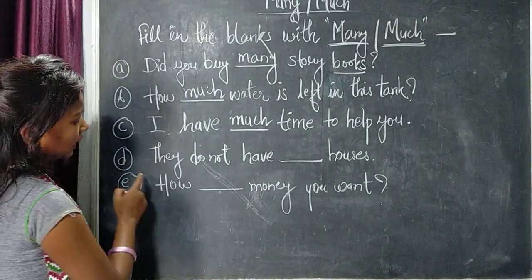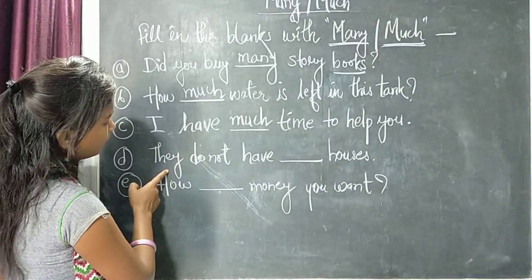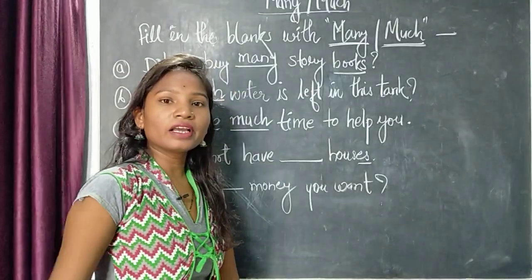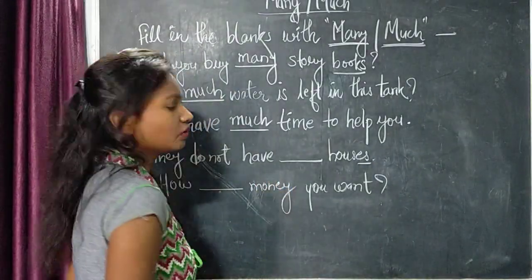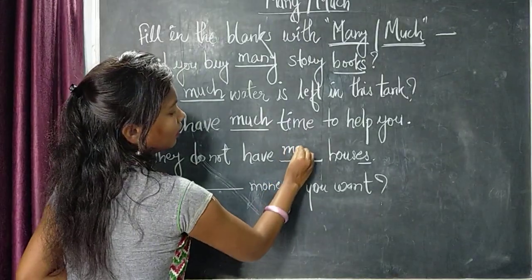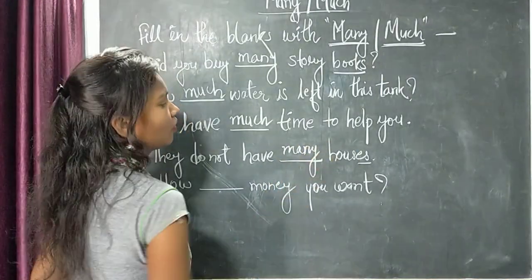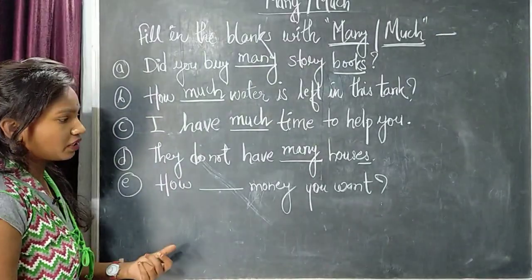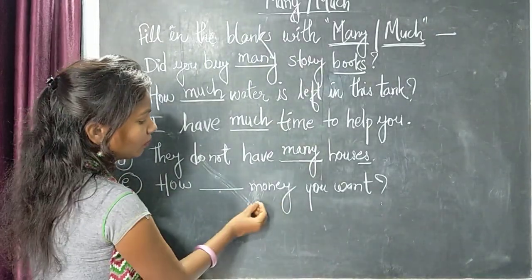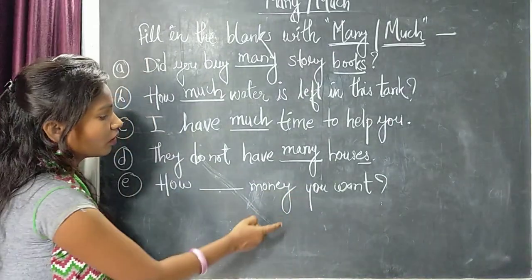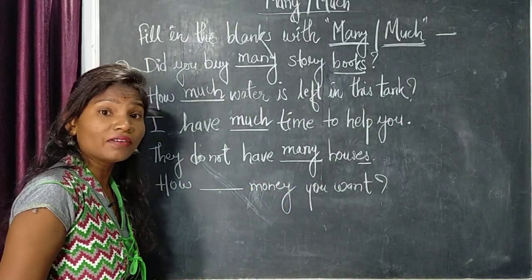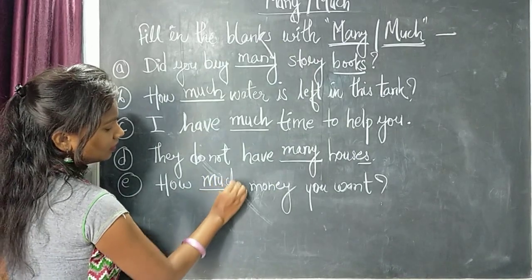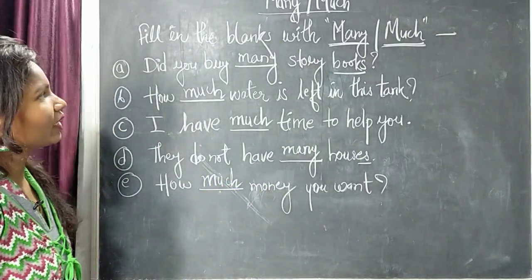Fourth sentence: 'They do not have ___ houses.' Houses has S written — it is a countable noun, plural. With plural countable nouns, what do we use? Many. Last sentence: 'How ___ money do you want?' Money is also an uncountable noun — it does not have S or ES. That's why we use much here.